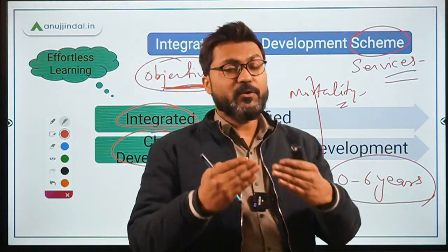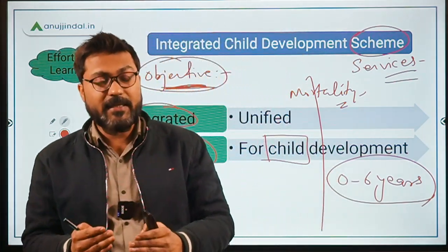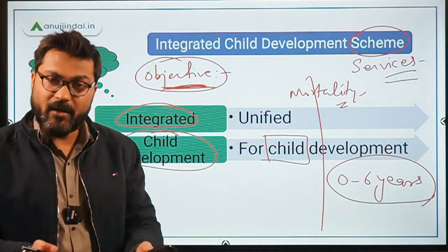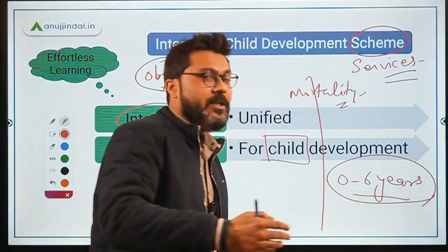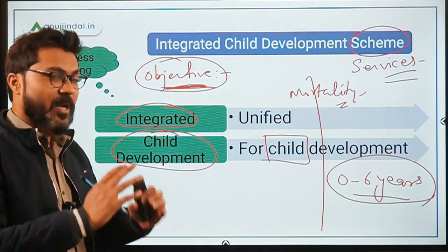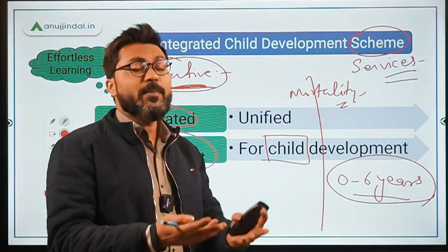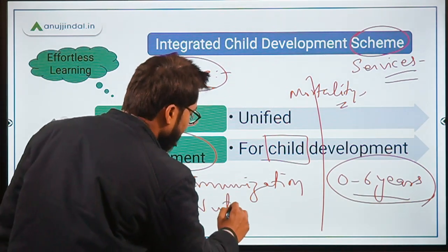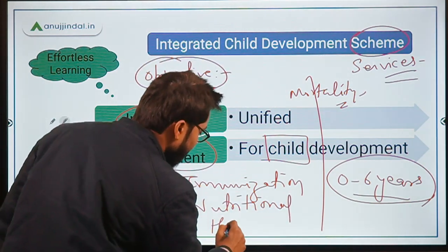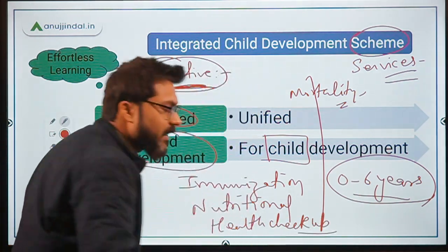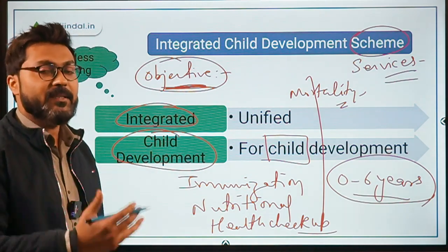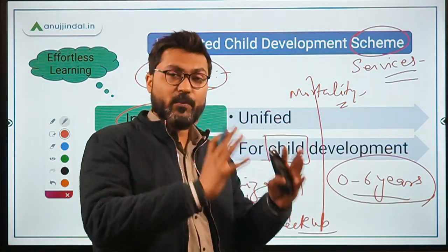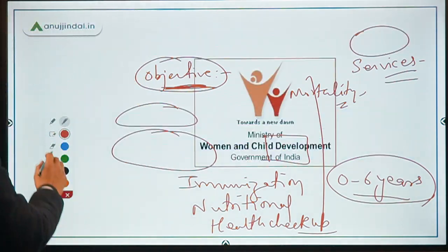The nutritional and health status will be improved by providing various services to the children. These services include, for example, immunization services, nutritional services, health checkup services, and referral services. Through these types of services, it will be ensured that children between the age group of 0 to 6 years have all the nutritional and health support that is required.